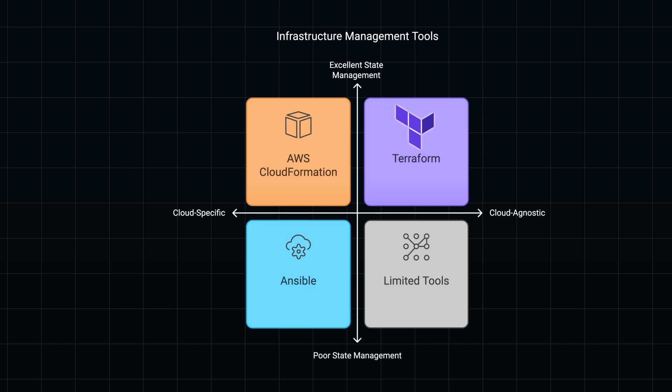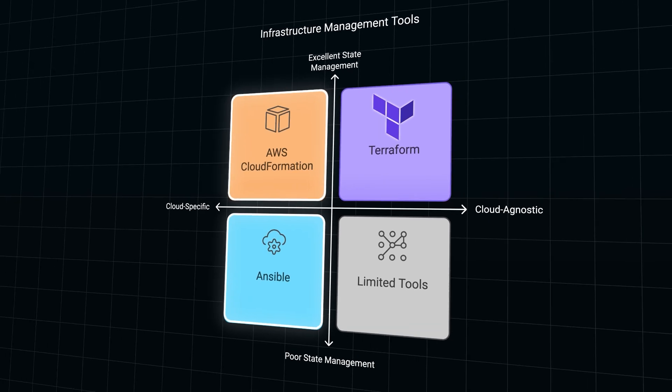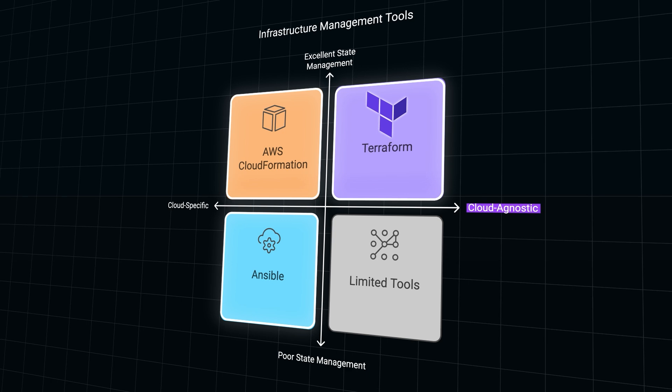There are several tools out there for managing infrastructure, like AWS CloudFormation or Ansible. CloudFormation is AWS-specific and helps automate resources within AWS, while Ansible focuses on configuration management. But both have limitations when it comes to managing complex multi-cloud environments. Unlike CloudFormation, which ties you to a single cloud provider — in this case AWS — Terraform is cloud agnostic.